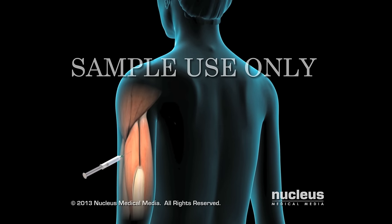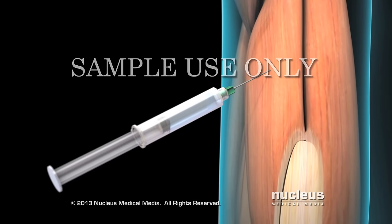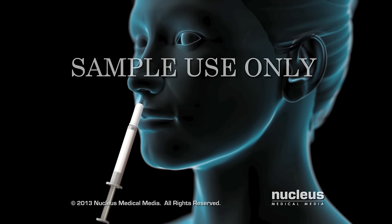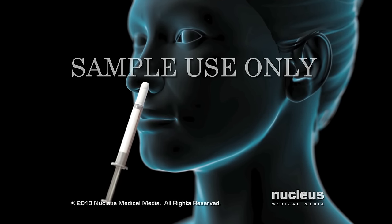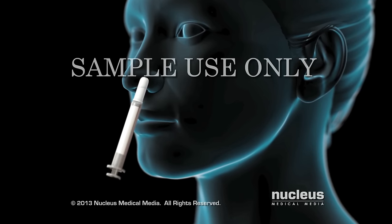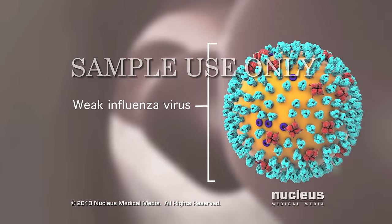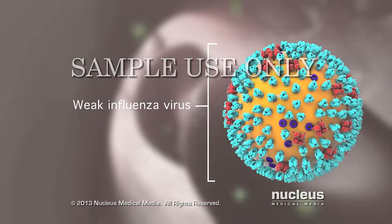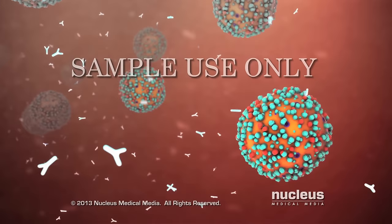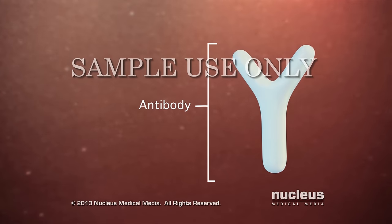The best way to protect yourself from the flu is to get the flu vaccine every year. You may receive the vaccine as a shot, which contains dead versions of several types of the virus, or as a nasal spray, which contains several types of live but very weak forms of the virus. The vaccine exposes your body to several types of the influenza virus that are too weak to cause infection, but just strong enough to stimulate an immune response. Within two weeks, cells in your immune system make markers called antibodies, which are specific for only the types of flu you were exposed to.